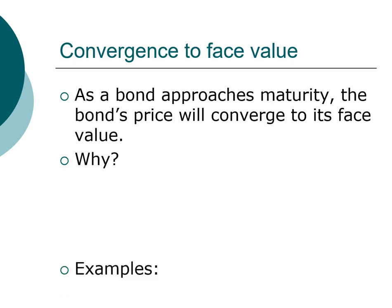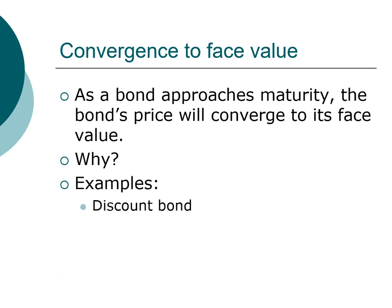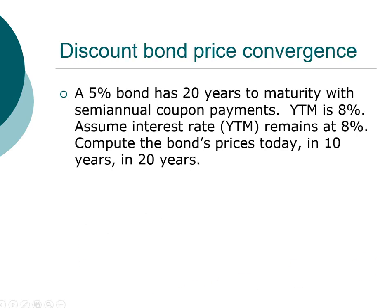Let's take a look at a couple of examples. We're going to look at how the price of a discount bond changes over time and how the price of a premium bond changes over time. First, let's look at a discount bond. Here we have a 5% bond, meaning the coupon rate for this bond is 5%.